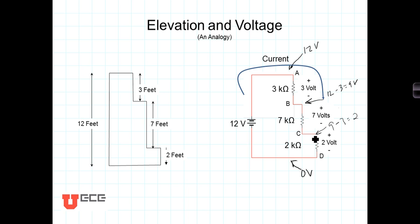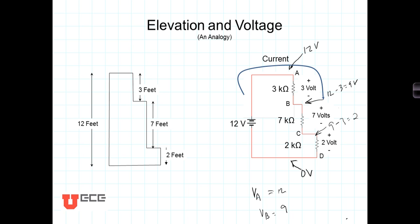So the voltage at that point relative to our reference is 2 volts. Nomenclature-wise, we use V with a subscript: V_a is the voltage at point A, which is 12 volts; V_b is 9 volts; and V_c is 2 volts.